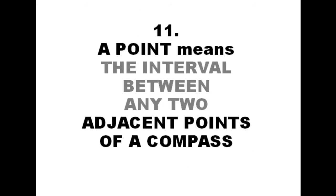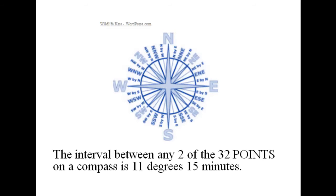A point means the interval between any two adjacent points of a compass. The interval between any two of the 32 points on a compass is 11 degrees, 15 minutes.